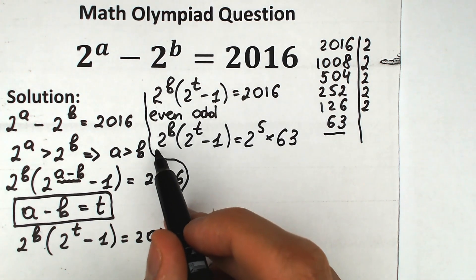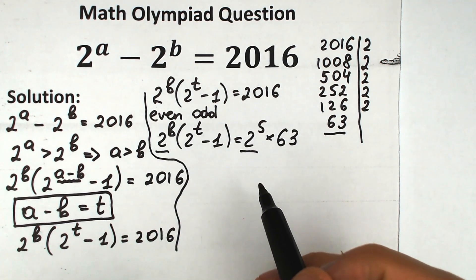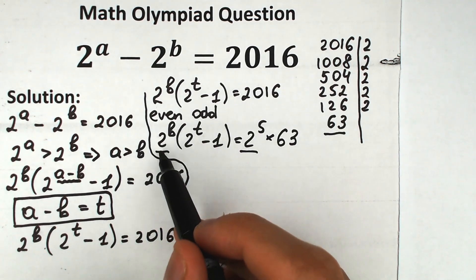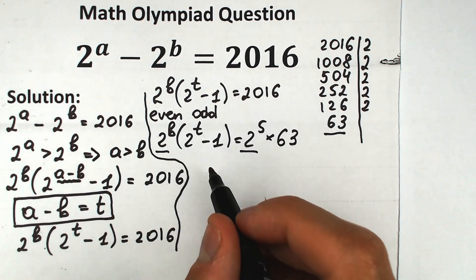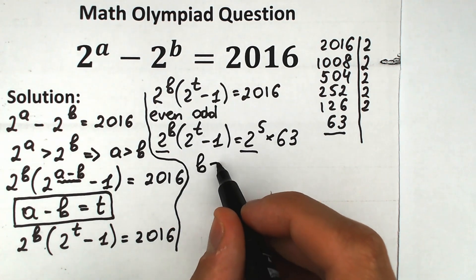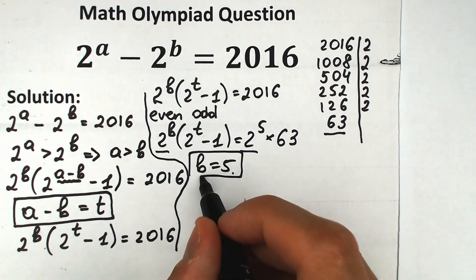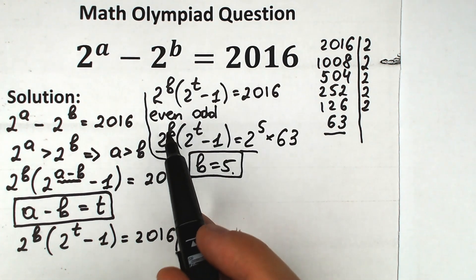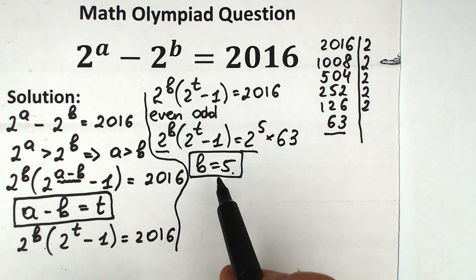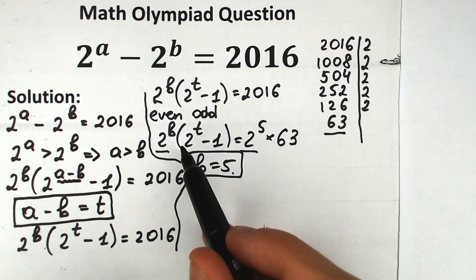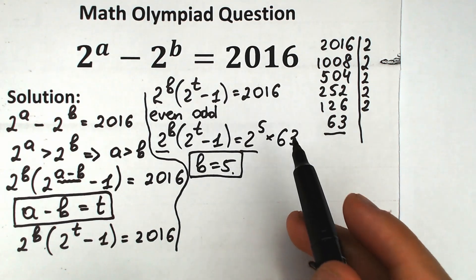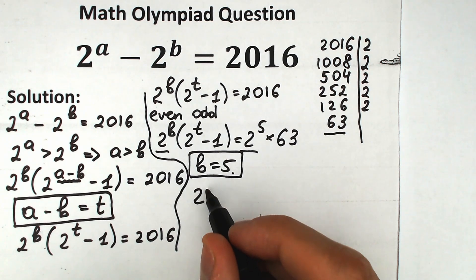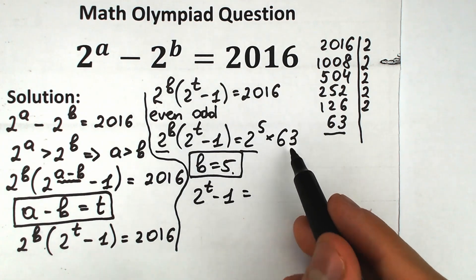Now, 2 to the power B on the left matches 2 to the power 5 on the right, so B equals 5. We still have the parenthetical expression matching 63, so 2 to the power T minus 1 equals 63.